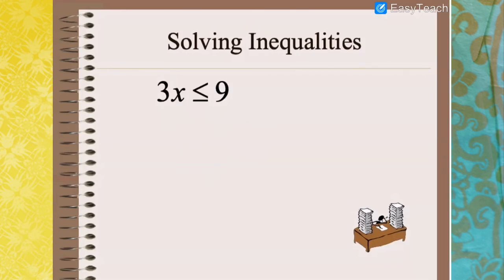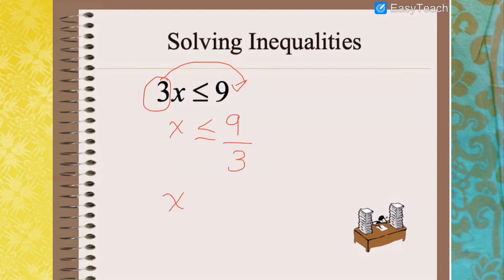Another example: 3x less than or equal to 9. Since 3 is being multiplied on the left side, when we transfer it, it will be division. So x less than or equal to 9 divided by 3, therefore x is less than or equal to 3.